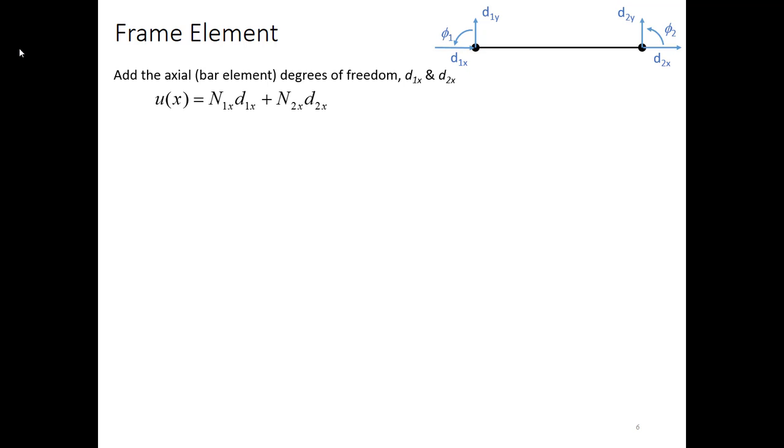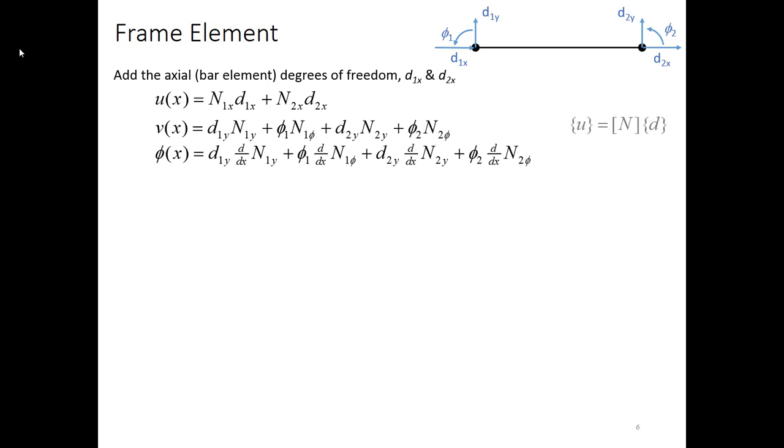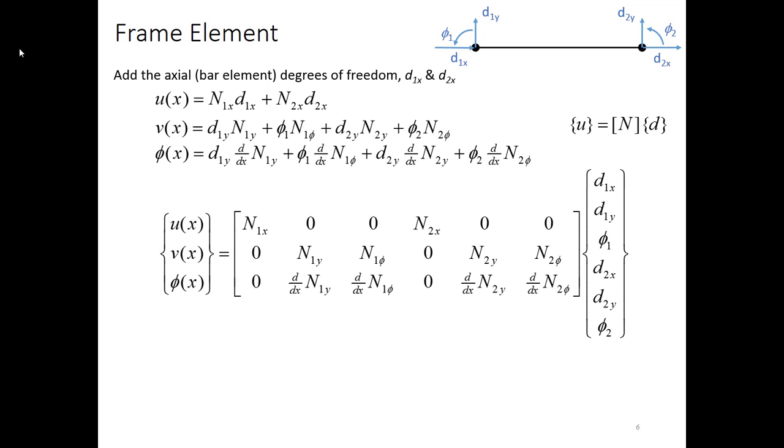Now what we need to do is go and look at each of the shape function relationships. So for a bar element we already know a good relationship between the axial displacement and the degrees of freedom. We've got two additional expressions now for transverse displacement and slope relationships. I'm going to write all of those in matrix form where I take the vector U is equal to the shape function matrix N multiplied by the degree of freedom vector D. Putting that all together, this is what it ends up looking like. So I have now three rows and six columns in my N matrix, but I've captured all six degrees of freedom and all three directions of motion that I'm allowing or our displacement field variables.